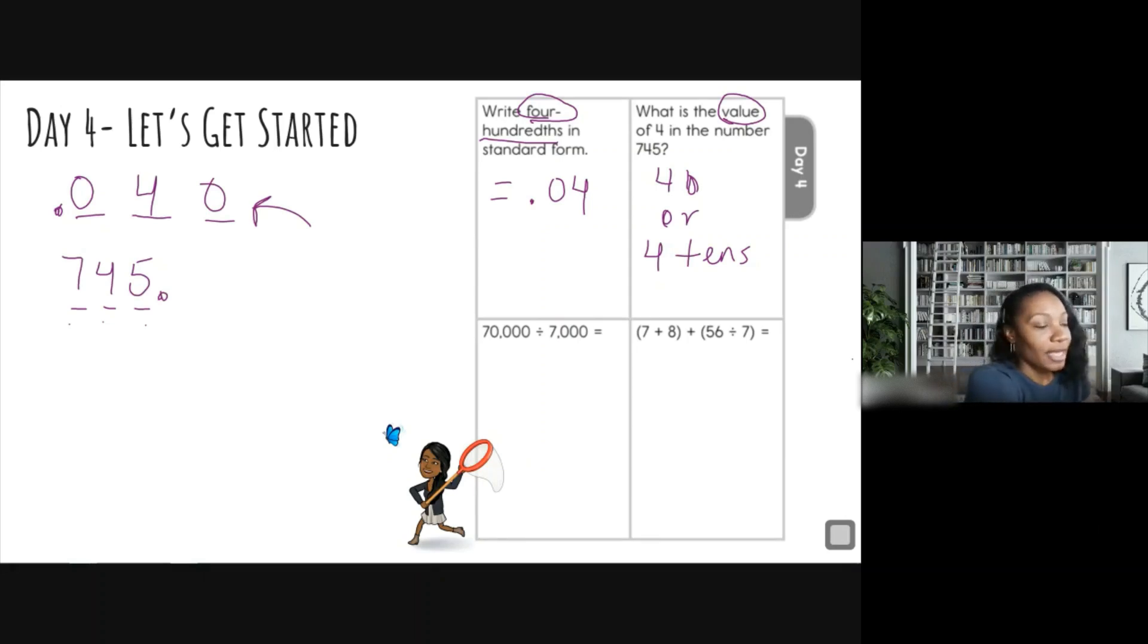All right. Let's look at this number. At first I thought that was a decimal, but it's actually a comma. So that is 70,000 divided by 7,000. Wow, those are some really big numbers, but I'm going to show you a trick really quick. So let's write these numbers out: 70,000, and I'm going to line these up, so 7,000, right? I'm going to put a line right there.